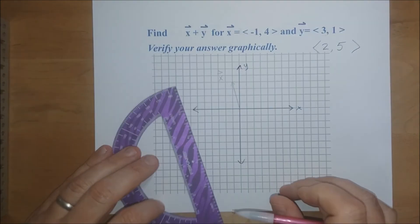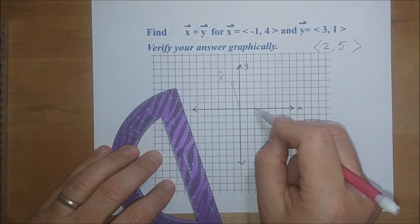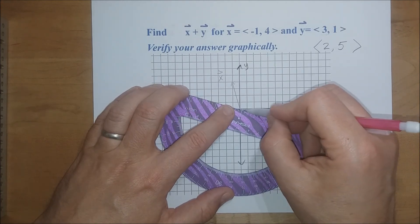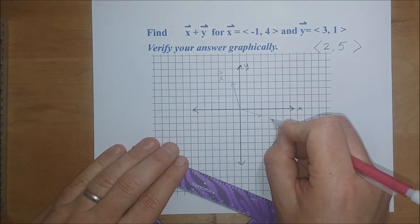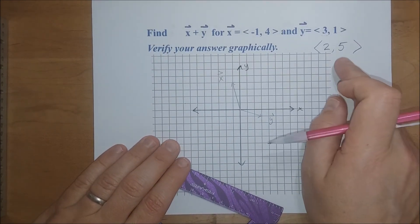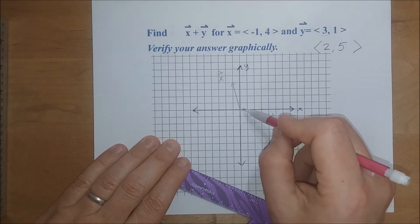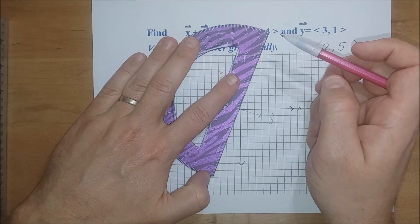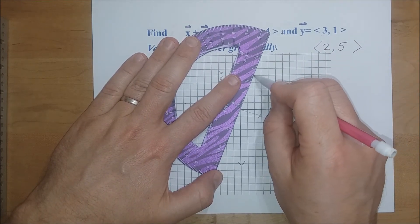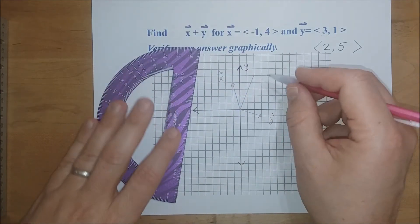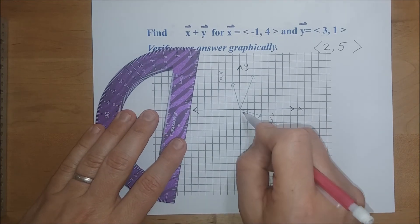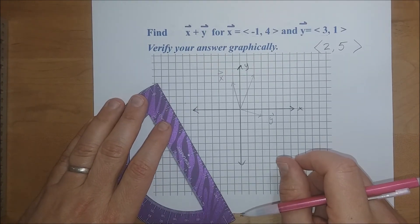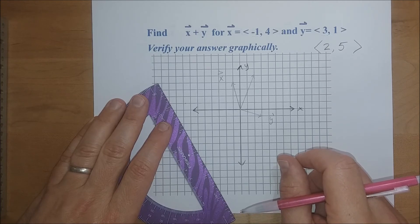Vector Y at [3, 1] is plotted in standard position. We found the resultant is [2, 5], so over two and up five gives the terminal point of the resultant. This is one of the reasons I like the parallelogram method — when you put both vectors in standard position, it sets you right up to draw a parallelogram to confirm your calculations.